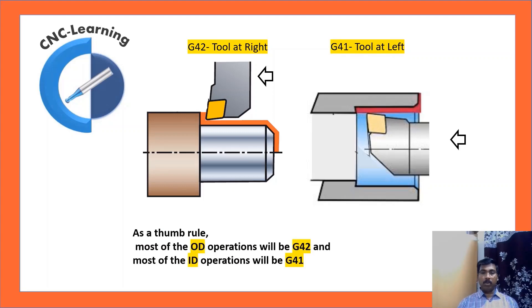As a thumb rule, most of the OD operations will be G42 and most of the ID operations will be G41.